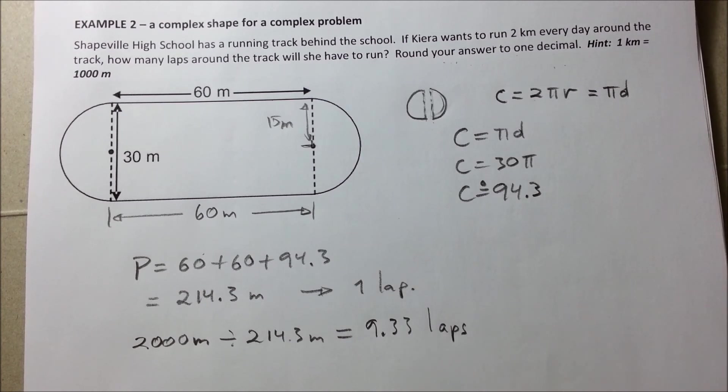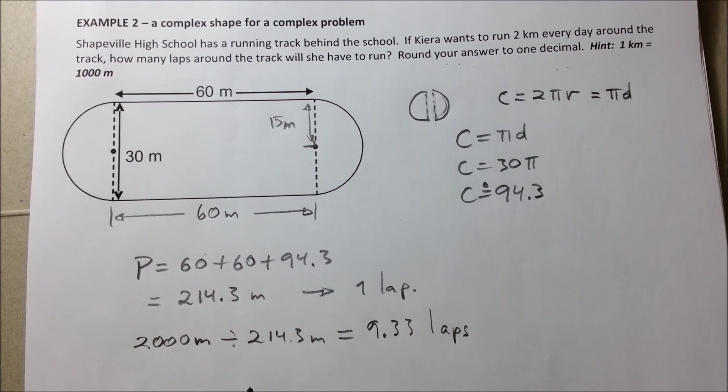So, 9.33 laps. So, in other words, therefore, she needs to run at least 9.33 laps to complete 2 kilometers.